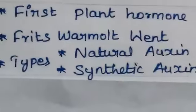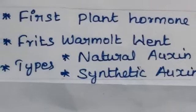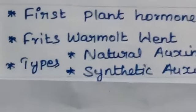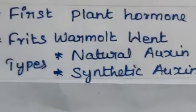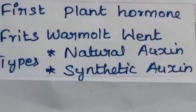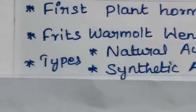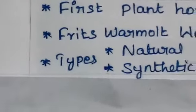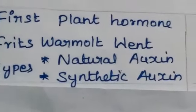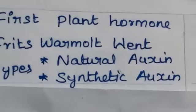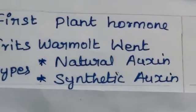Auxin is the first plant hormone identified, and its name means 'to grow.' Fritz Went, a Dutch biologist, did a series of experiments in avena coleoptiles and concluded that auxin produced at the tip of a coleoptile is responsible for growth. There are 2 types of auxin: natural auxin and synthetic auxin.